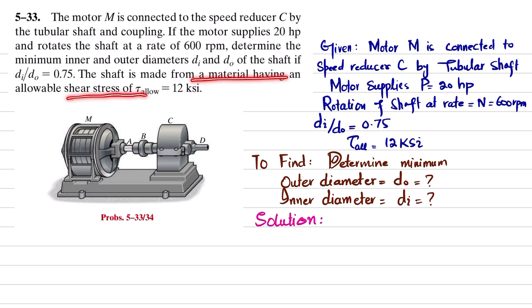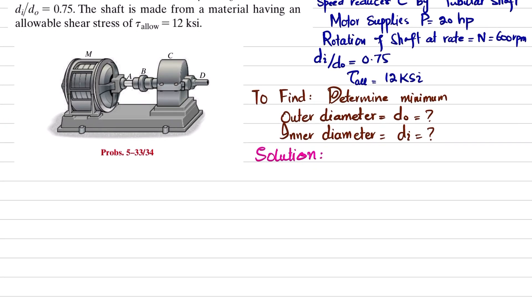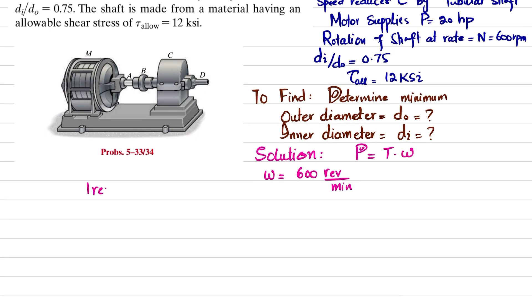The shaft is made from material having allowable shear stress of 12 ksi. We start with the solution. Power is equal to torque times angular velocity. Angular velocity can be found since the shaft rotates at 600 revolutions per minute, and one revolution equals 2π radians.